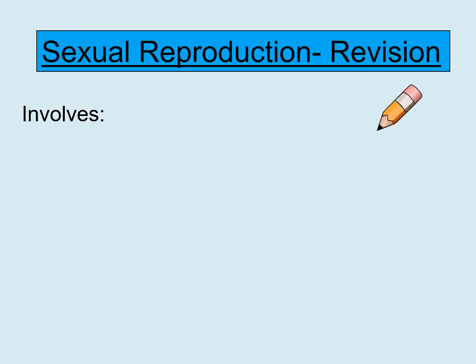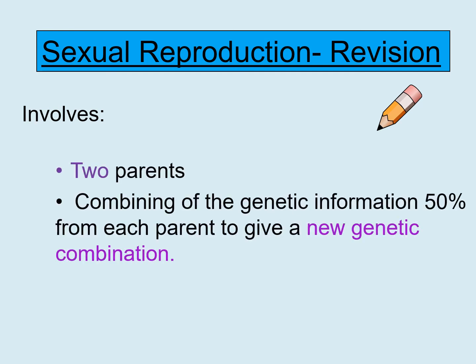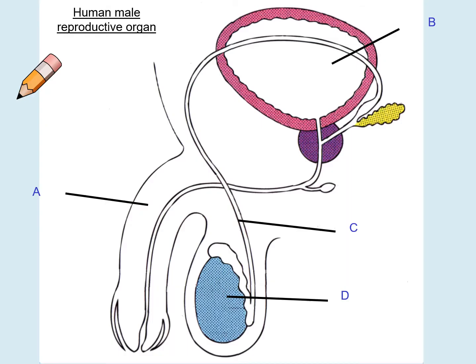Sexual reproduction involves two parents — you get 50% from your mum and 50% from your dad — and your parents give you a new genetic combination. This process produces variation, so the offspring are not genetically identical to their parents or to any siblings that they have. We're going to look at sexual reproduction in more detail.